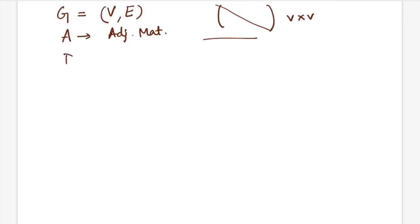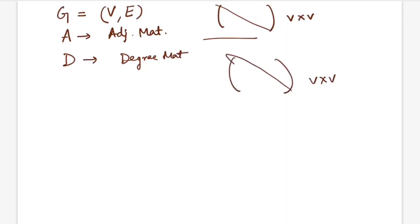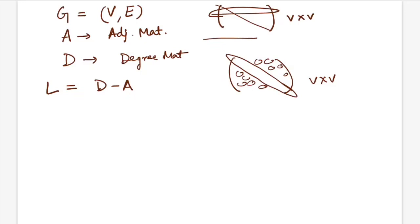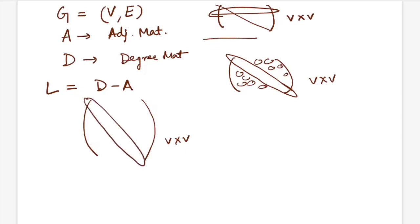The degree matrix D is also a V×V diagonal matrix where the principal diagonal holds the degree of each vertex and all other values are zero; degree is found by row-summing the adjacency matrix. The graph Laplacian L is defined as D minus A — subtracting the adjacency matrix from the degree matrix — giving a V×V matrix where diagonal elements are the degrees, and off-diagonal elements are negative one wherever connections exist, zero otherwise.